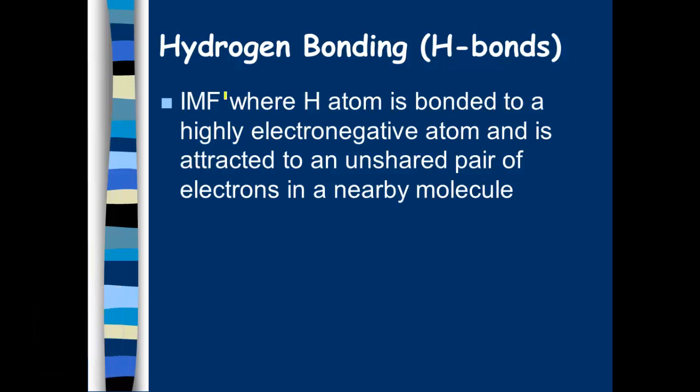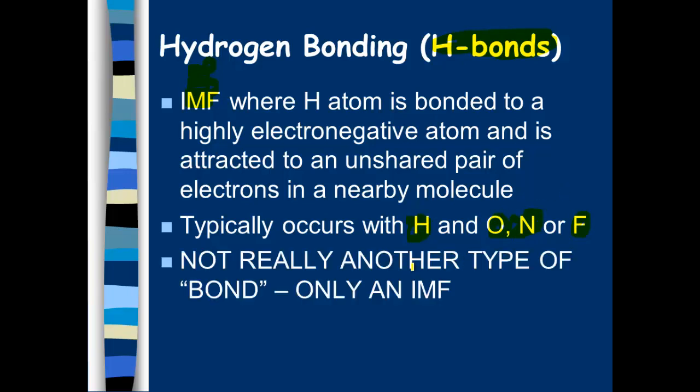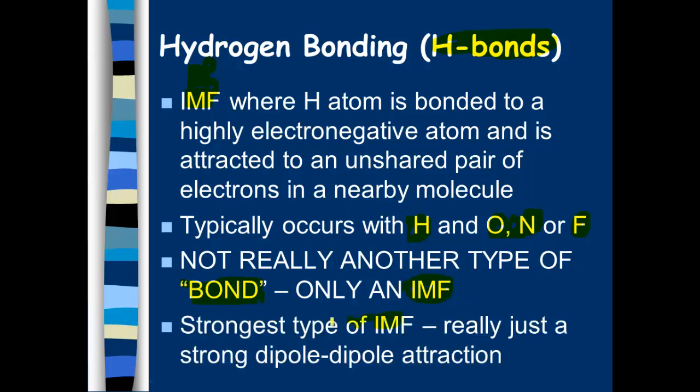Now, hydrogen bonding is a special type of intermolecular force. And again, I don't like the fact that they use bonding in here, but I can't change it. This is intermolecular force where a hydrogen atom is bonded to a highly electronegative atom and is attracted to an unshared pair of electrons in a nearby molecule. Now, I know that that's kind of wordy. And this typically occurs when you have hydrogen and it's bonded to either oxygen, nitrogen, or fluorine, because they're really the big three in terms of electronegativity. And it's not really another type of bond. When we say bond, traditional bond, that's usually going to be your covalent bonds, your ionic bonds, and your metallic bonds. But it really is only an intermolecular force, so it is a little bit misleading in that respect. And it's the strongest type of intermolecular force. It really is an example of a dipole-dipole attraction. It's just a really strong type of dipole-dipole attraction. So therefore, it kind of gets its own fancy name.